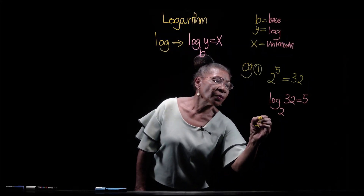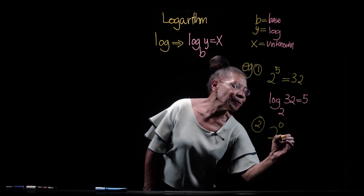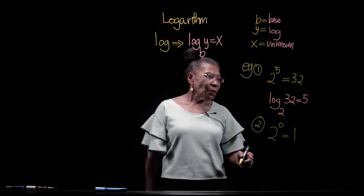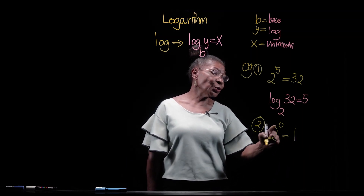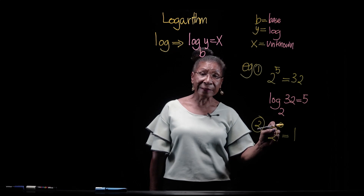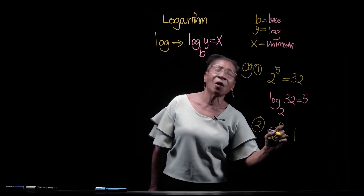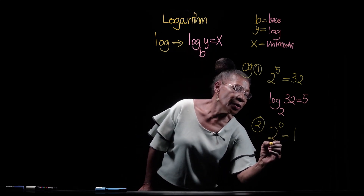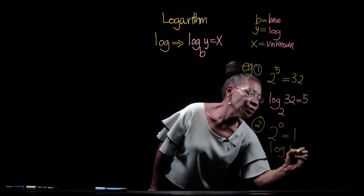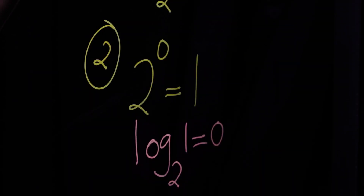Let's look at example 2. In example 2, I would use 2 as the base and the power would be 0. Power is 0, and that is equal to 1. Why is it that 2 to the power of 0 equals 1? Any number in the counting system raised to the power of 0 is equal to 1. If it's a million raised to the power of 0, the value is 1. If that is expressed in the form of indices, then in log form it would be written as log base 2, 1 is equal to 0. That's two examples on expressing a number in index form into log.